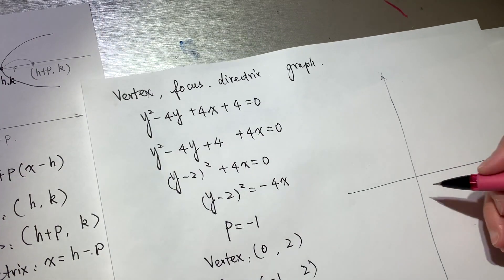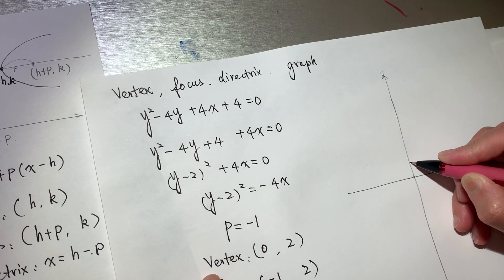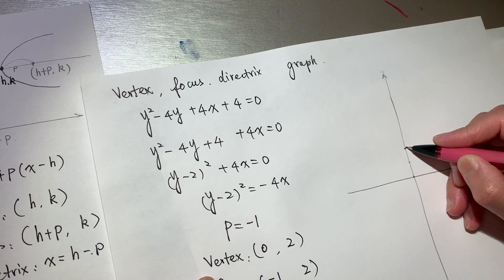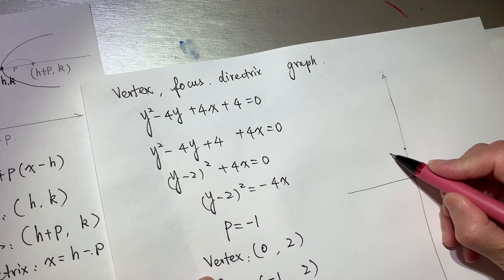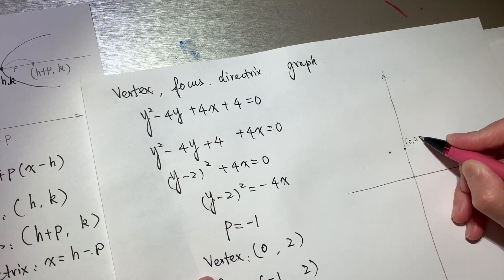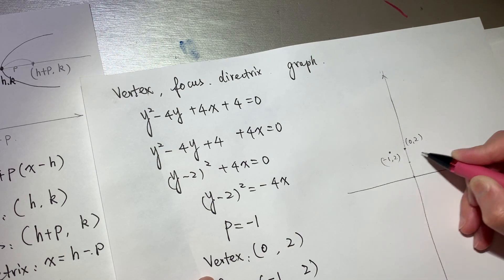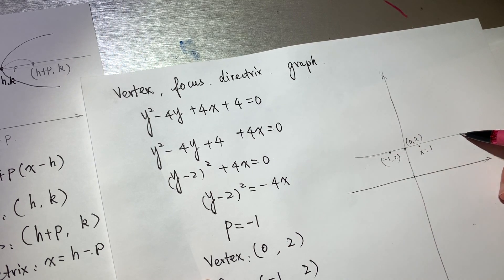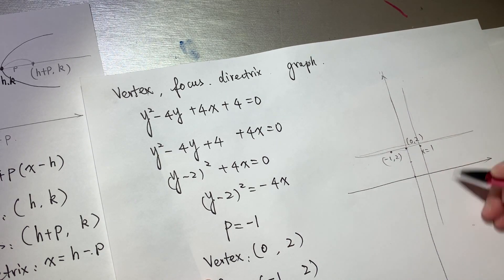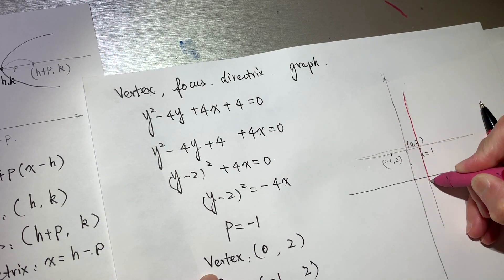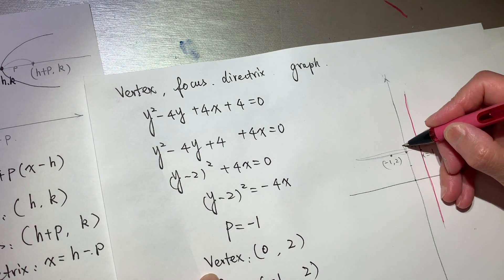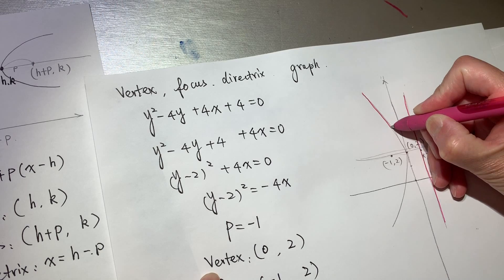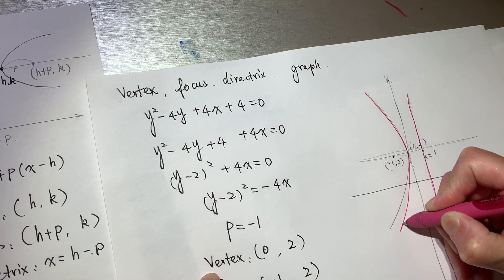The vertex is at 0, 2. The focus is at negative 1, 2. And x equals positive 1 is the directrix. And y equals 2 is the line of symmetry. Using a pink line for the directrix — this will be the graph.